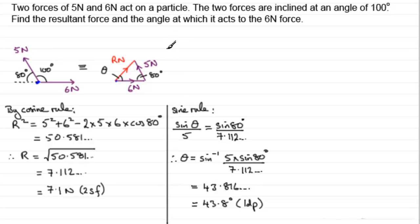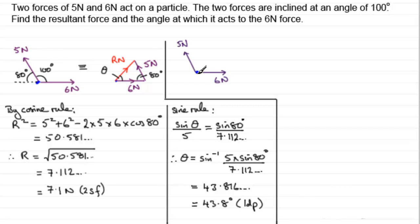There's another way we could have done this, and that is by resolving. We're going to split the 5 newtons into two components, considering forces acting in the horizontal and vertical sense. The angle between the forces is 100 degrees, but the useful one is the 80 degrees inside the triangle. We consider what is the overall force horizontally — x newtons — and what is the overall force upwards — y newtons — and the resultant acts somewhere through the combined direction.